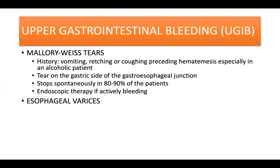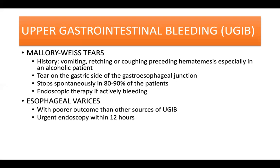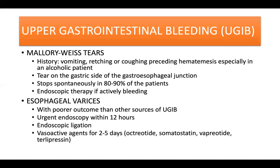Another etiology of upper GI bleeding is esophageal varices. Patients with variceal hemorrhage have poorer outcomes compared with other sources of upper GI bleeding. Urgent endoscopy within 12 hours is recommended, and if esophageal varices are present, endoscopic ligation should be performed. An IV vasoactive medication such as octreotide, somatostatin, vapreotide, or terlipressin is given for 2 to 5 days.